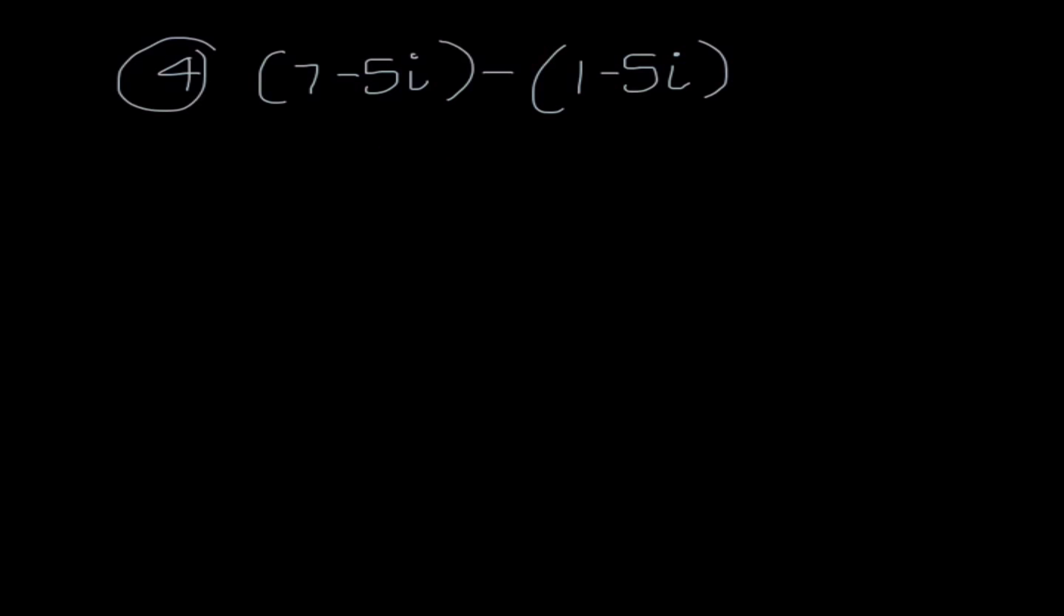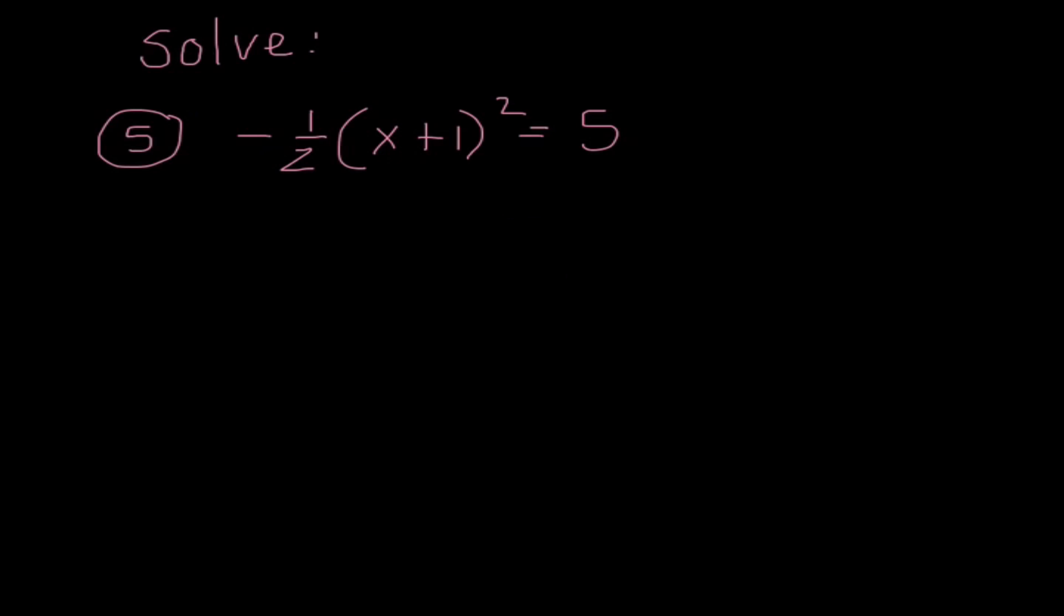Number 4. This is a problem that everyone tends to get wrong because we forget to distribute the negative. So I'm going to think of this as 7 minus 5i minus 1 plus 5i because I need to distribute this negative to everything. When I add my like terms together, I get 6 and my two i values cancel each other out. So my final answer is just 6.